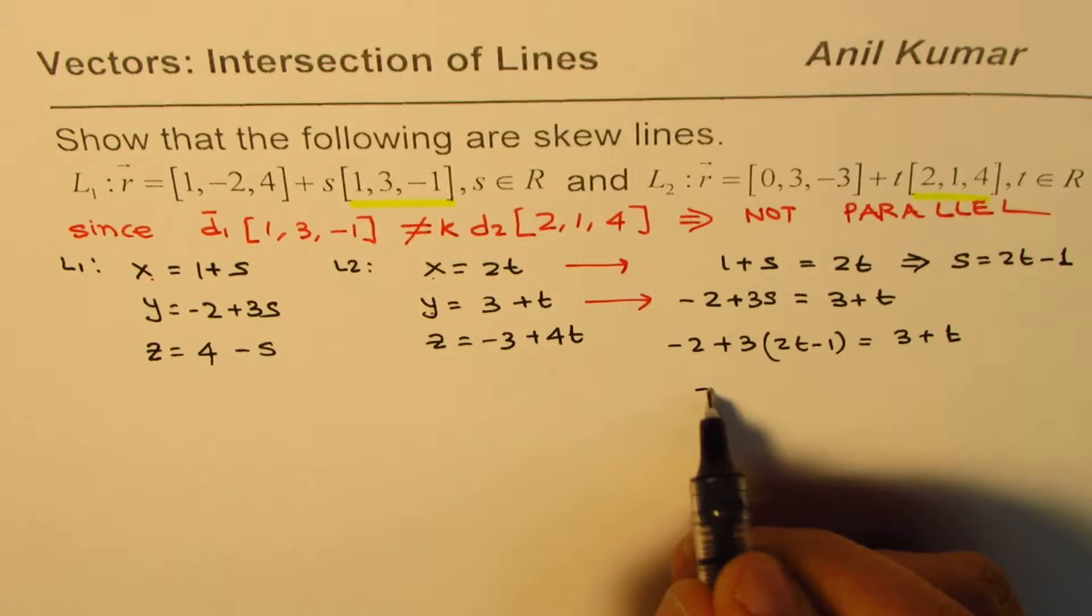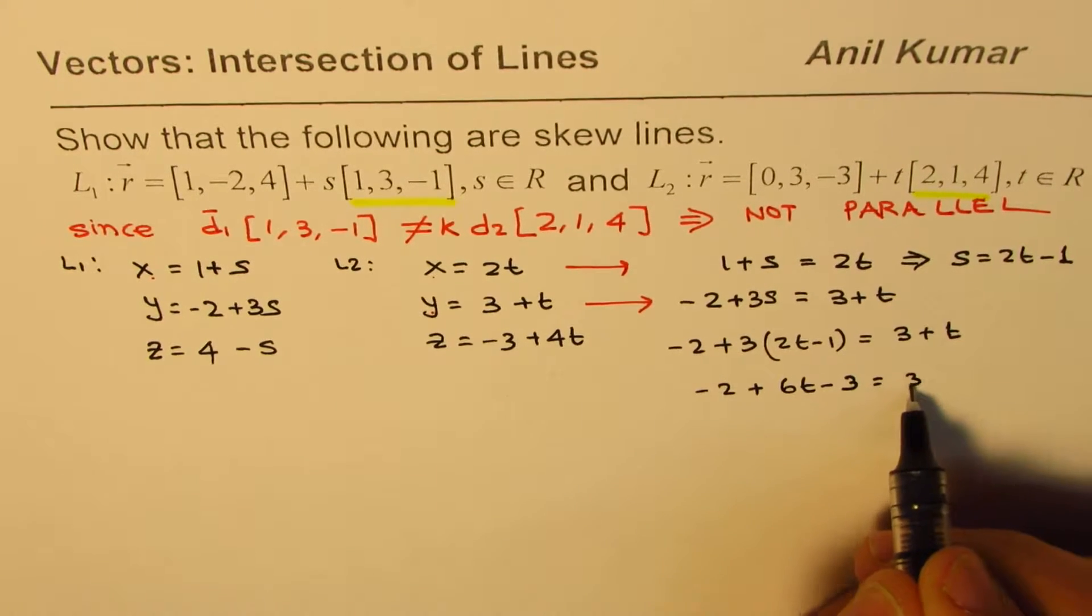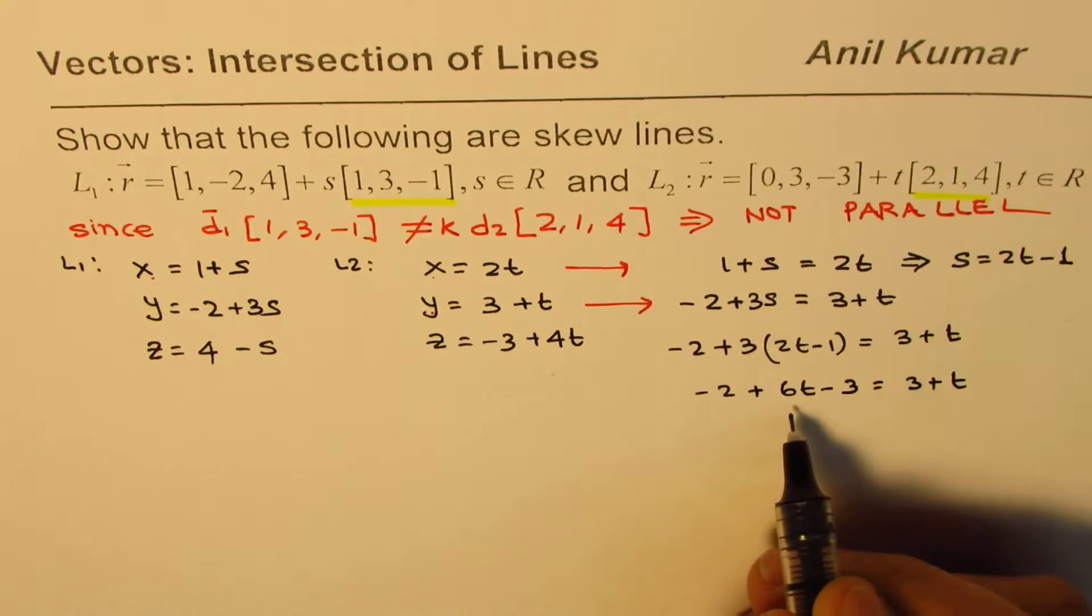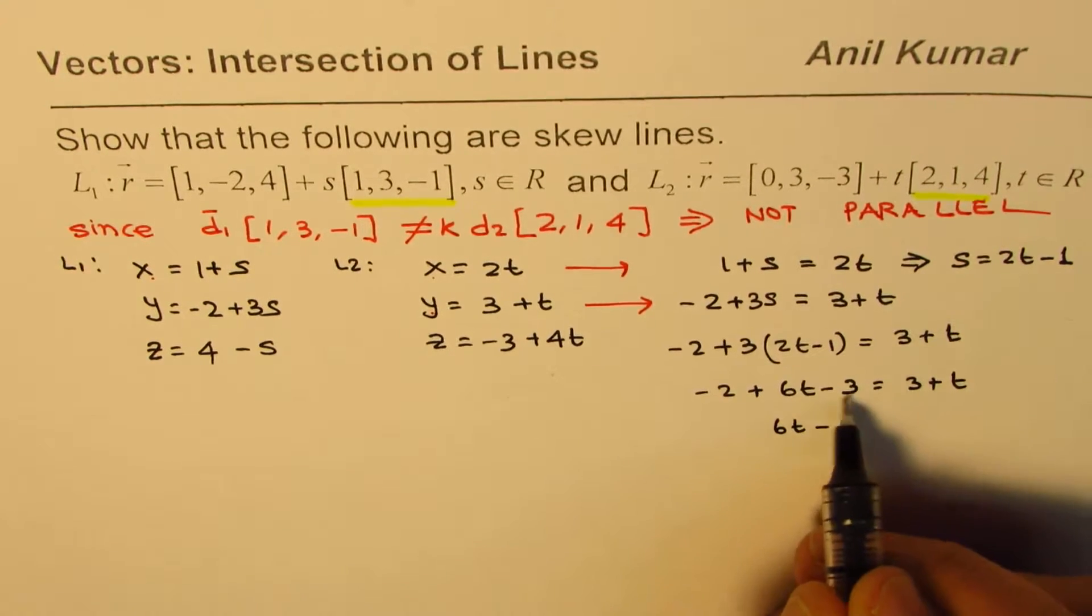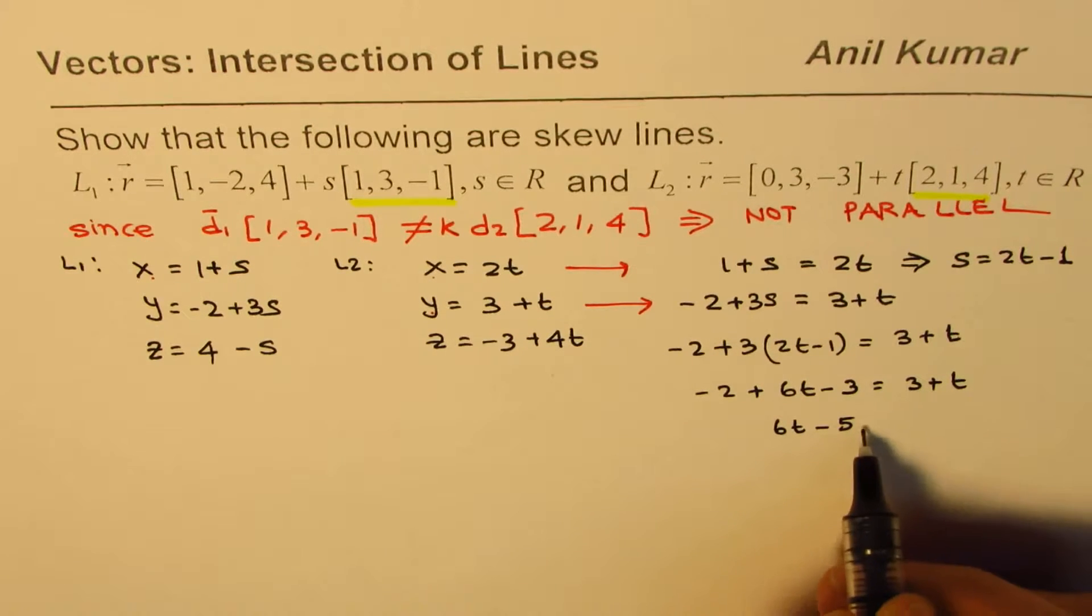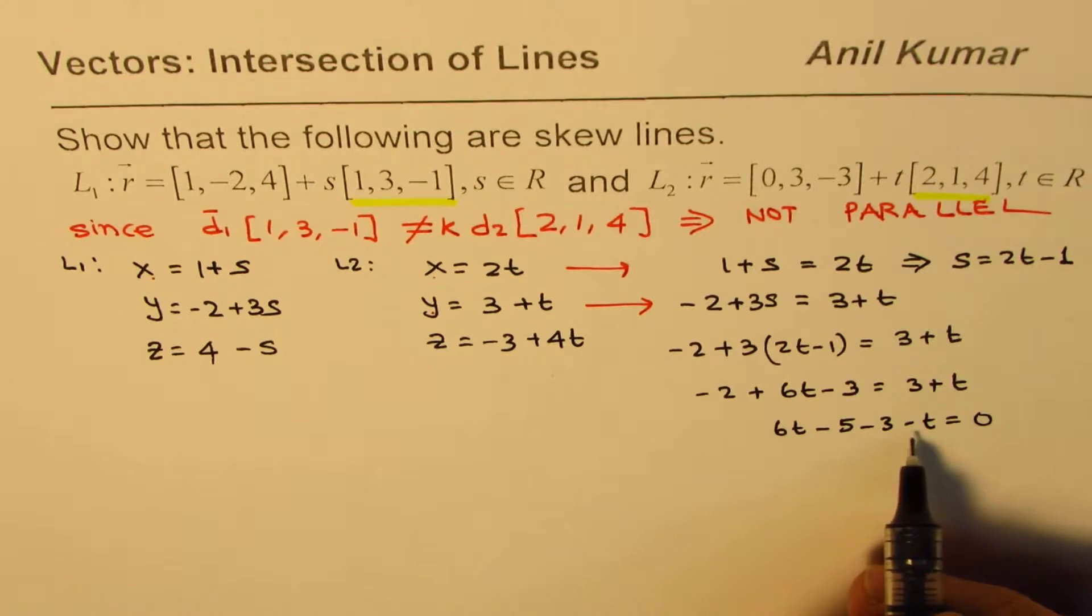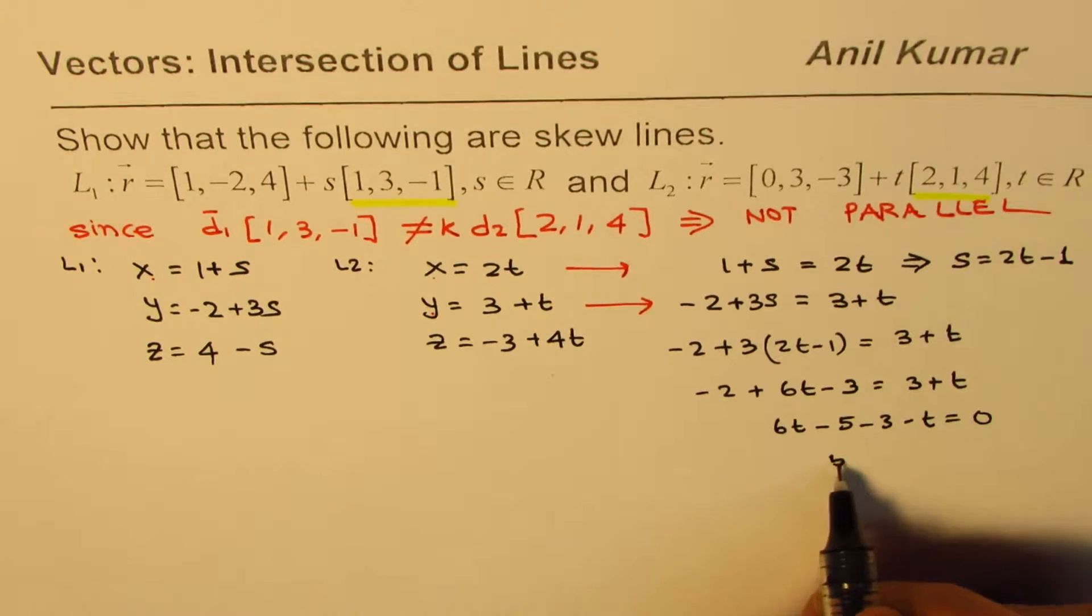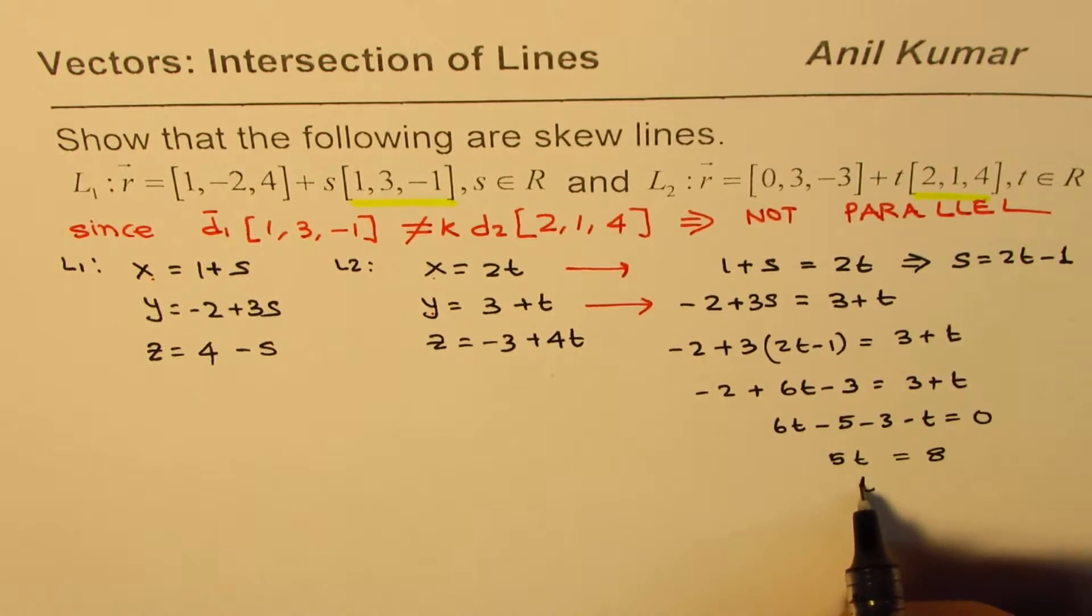Let's solve for t. We have minus 2 plus 6t minus 3 equals 3 plus t. This is 6t minus 5, minus t equals 0. 6t minus t is 5t and this is minus 8, so t equals 8 over 5.